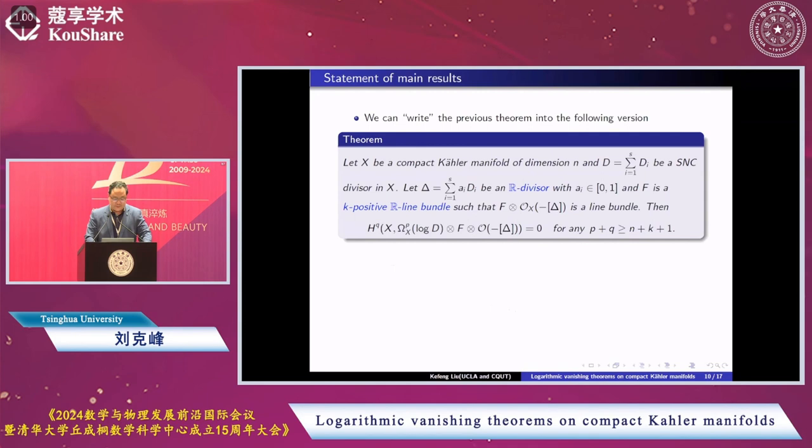We consider delta, which is an R-divisor with coefficients a_i between 0 and 1, and F is a k-positive real line bundle such that F tensor O_X(-delta) is a line bundle. Then the corresponding sheaf cohomology H^q(X, omega^p(log D) tensor F tensor O(-delta)) equals 0 for p plus q greater or equal to n plus k plus 1.